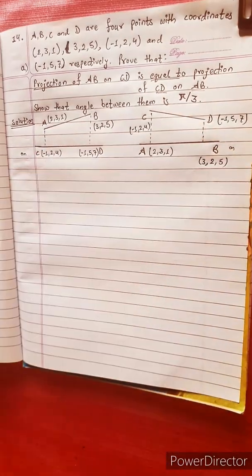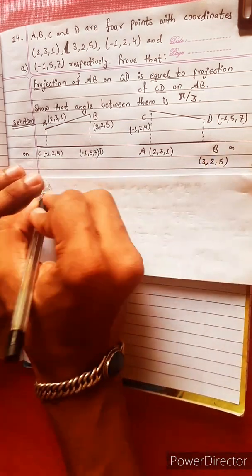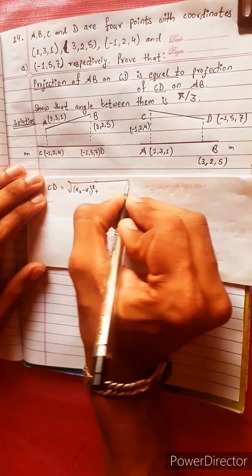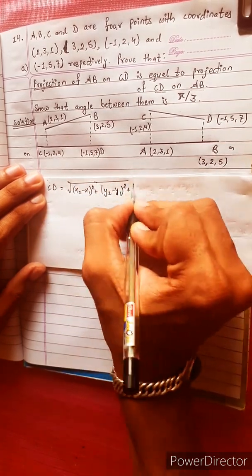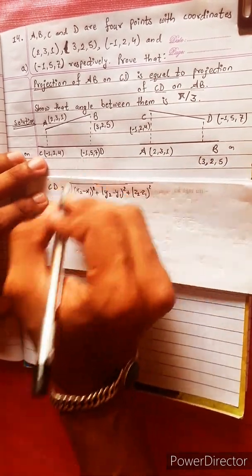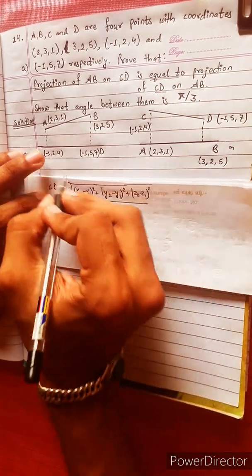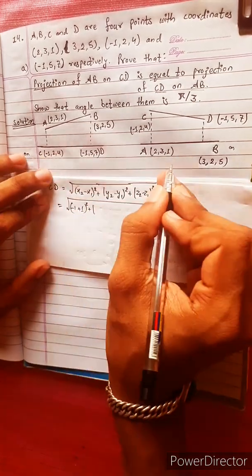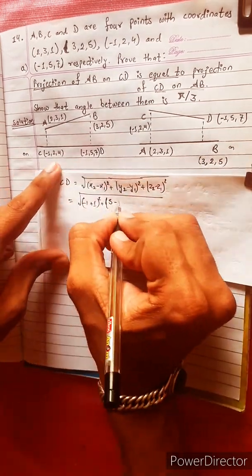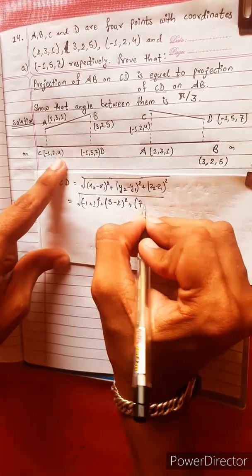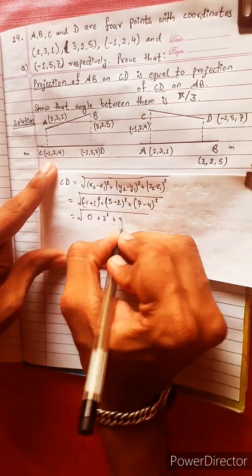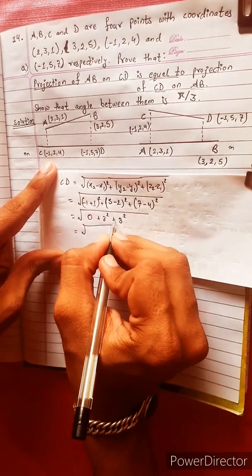Using the points C and D, we apply the distance formula: (X2 - X1) squared plus (Y2 - Y1) squared plus (Z2 - Z1) squared. Substituting values: (−1 − (−1)) squared plus (Y2 − Y1) squared plus (Z2 − 7 − 4) squared equals 0 plus 3 squared plus others.